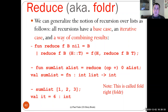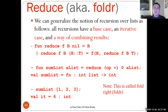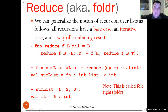We'll start with reduce, also called fold right. Fold right is a standard operation in functional programming languages when we want to generalize the notion of recursion over lists. All recursions have a base case, then an iterative case, and a way of combining the results from the iterative case from the end back to the beginning — that's why it's called fold right. This reduce operation takes the function we want to apply to all of the elements, the base case, and then a list.